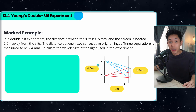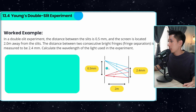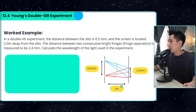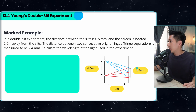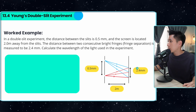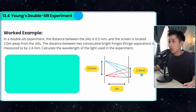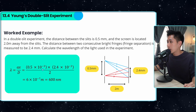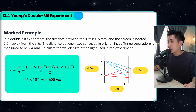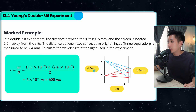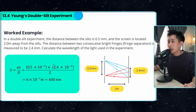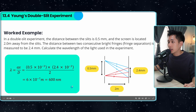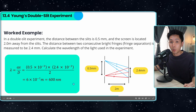Let's do a worked example. In a double slit experiment, the distance between the slits is 0.5 mm, the screen is 2 m away from the slit, and the distance between two consecutive bright fringes is 2.4 mm. Calculate the wavelength. Applying the formula and substituting all the values — converting mm into meters as the SI unit — we get the wavelength of the light.